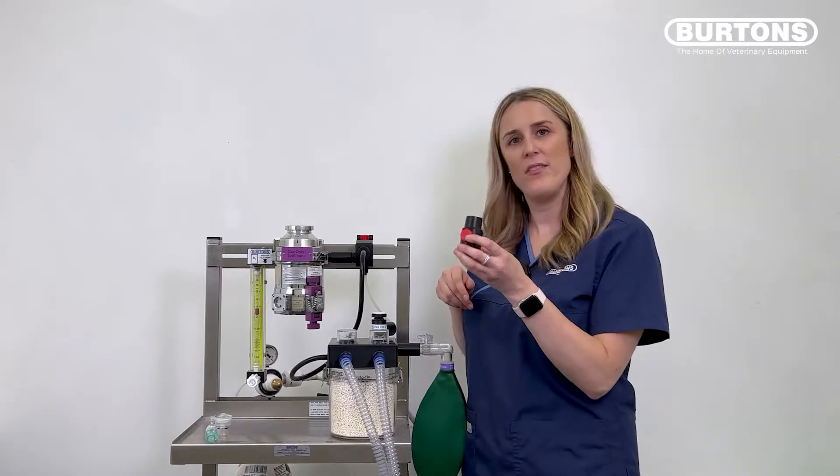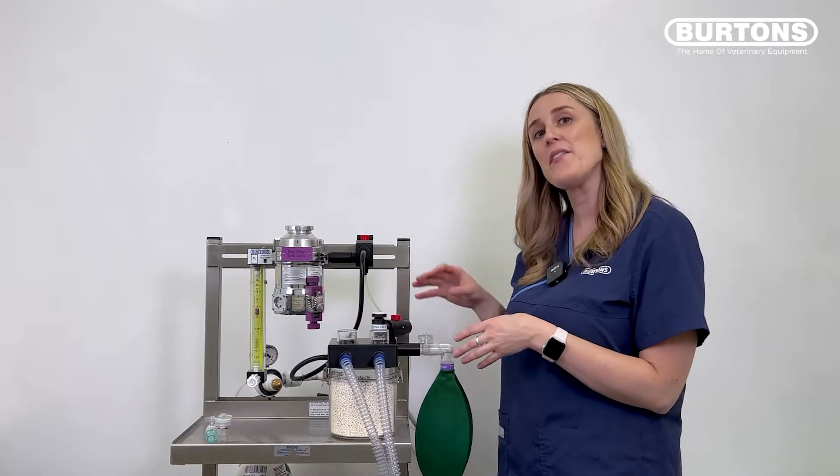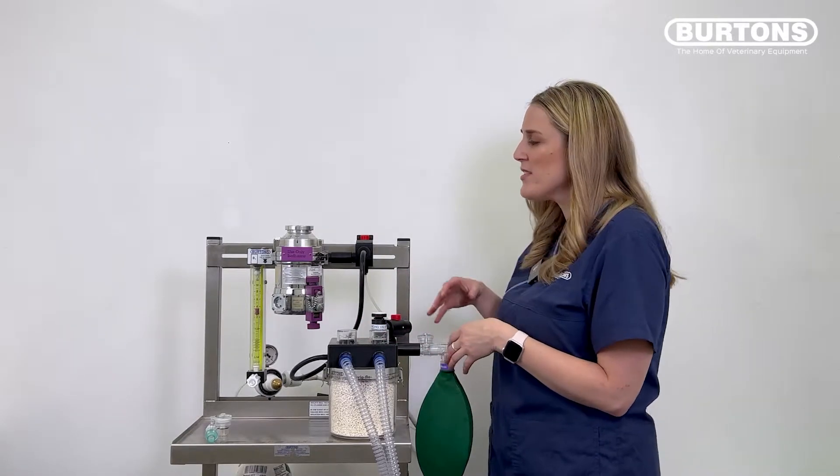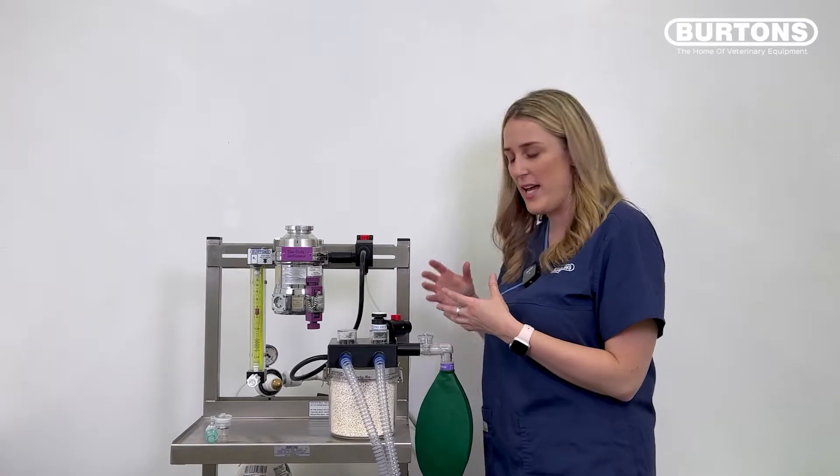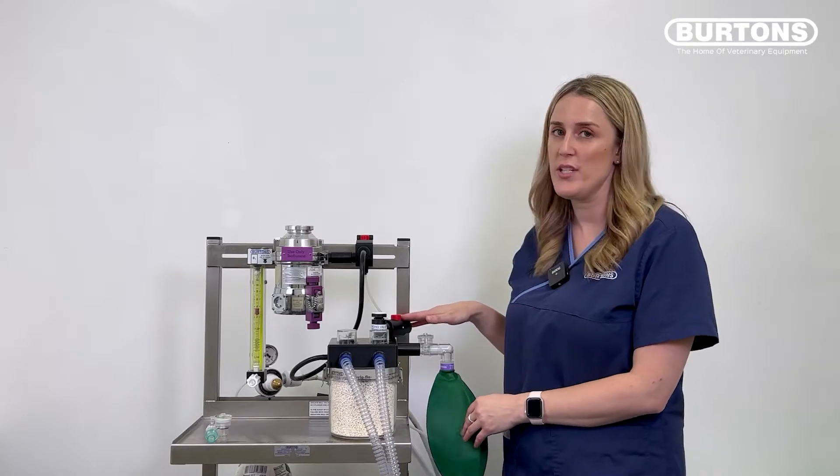Now I have the IPPV button valve, I just need to attach that to the scavenge. You can imagine that we would have scavenging tubing here but because I'm only using oxygen I don't have to have a scavenging system in place here but you can imagine this is exactly where you would attach yours.